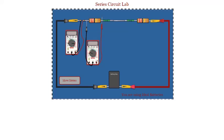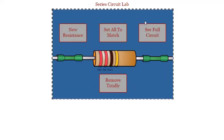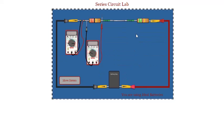Then once you've done that, in question 7 they say okay, now click on your right resistor and choose a new resistance for that one, and click 'see full circuit'. So now we've got a circuit that's got two resistors but they're not equal values. I'm going to answer a couple of questions, questions 7 and 8.